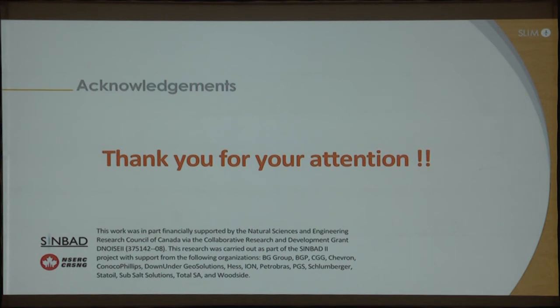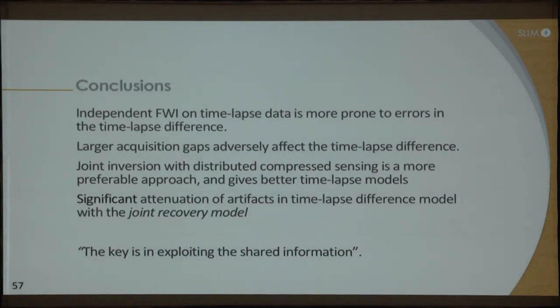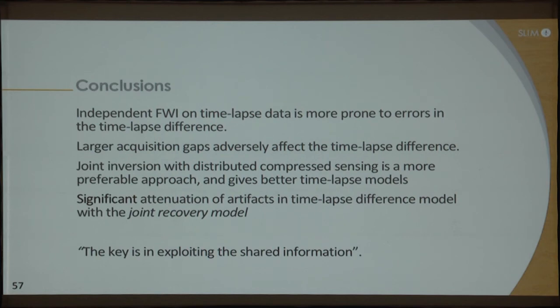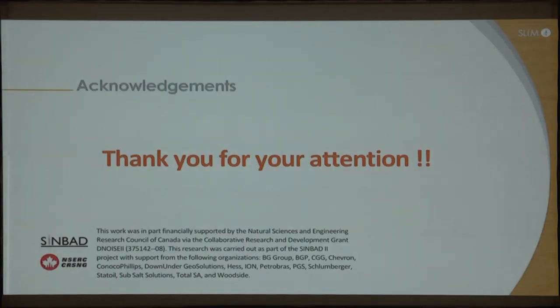To conclude: independent FWI on time-lapse data is prone to errors, especially when there are gaps, particularly when you look at the time-lapse difference. Acquisition gaps can create significant errors in the time-lapse difference, which we can suppress using joint inversion. This joint inversion is based on ideas from distributed compressive sensing, and we are able to reduce inversion artifacts arising either from differences in geometry or from gaps. The key idea is exploiting the shared information between the baseline and the monitor in our joint inversion. Thank you.